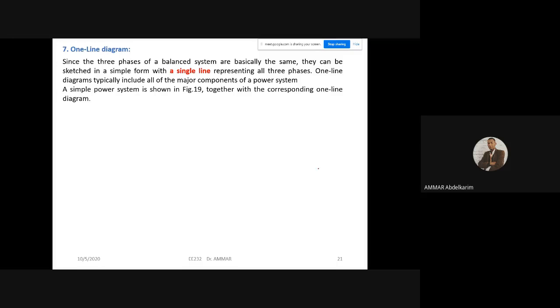So today we are going to see another point which is called a one-line diagram. This is just some kind of representation. Since the three phases of a balanced system are basically the same, they can be sketched in simple form with a single line representing all three phases. One-line diagram typically includes all the major components of the power system. So if we have sources, transformers, loads, they can be represented in one-line diagram.